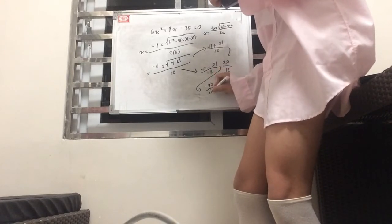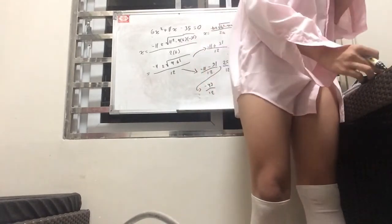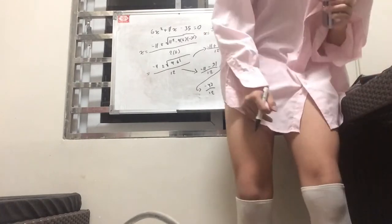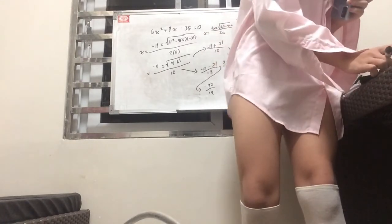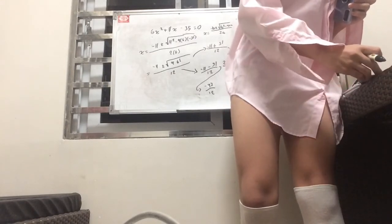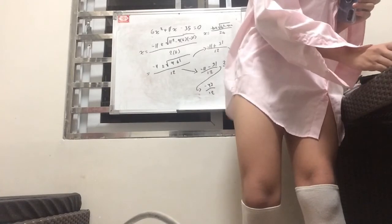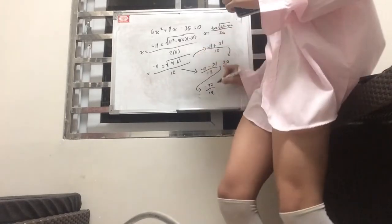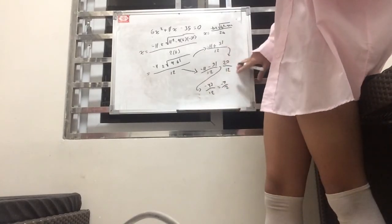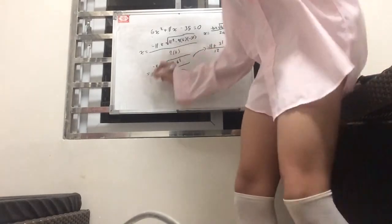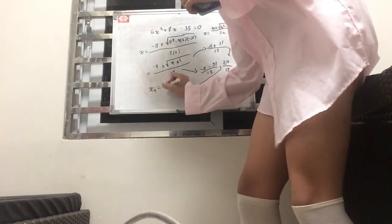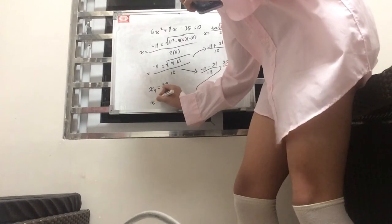And for negatives, that would basically be negative 11 minus. I'm kind of dependent on the calculator right now. So, that would be negative 42. Negative 42 over 12. That would be 3.5. Or, negative 7 over 2.